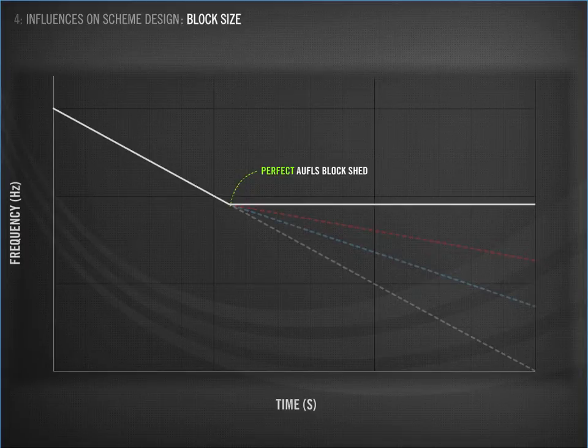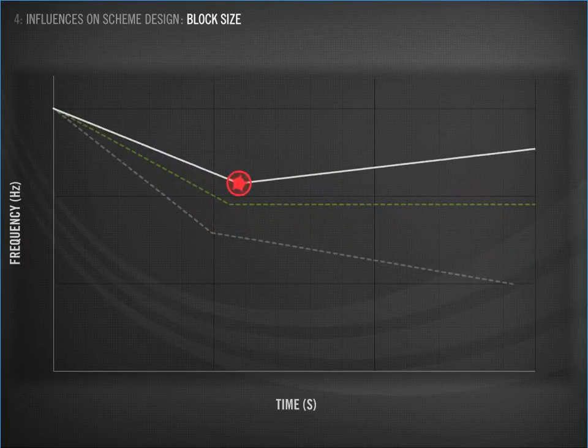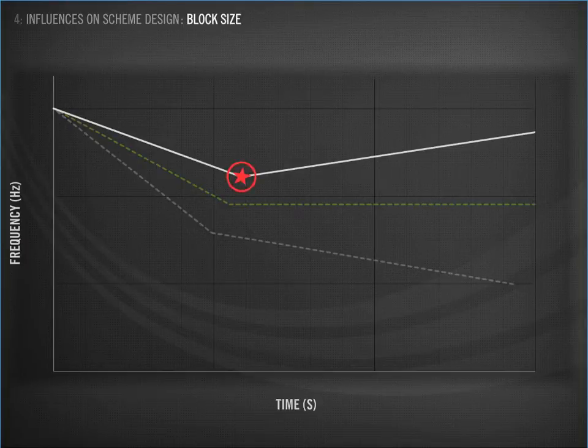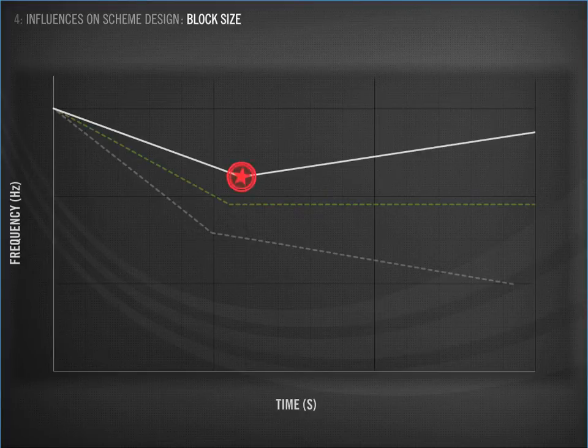However, perfect is difficult to achieve, because the amount of load that is disconnected could be perfect for one situation, but too little or too much for another. We call the concept we have just explored braking. It is a limited analogy, but it helps illustrate that when you disconnect load, you are reducing the speed at which the frequency is falling.